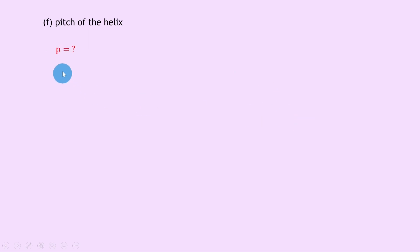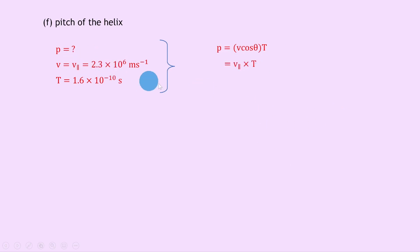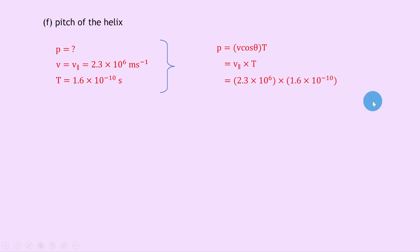Part f: calculate the pitch of the helix. The pitch p is caused by the parallel component of velocity from part a: 2.3e6 meters per second. The period from part e is 1.6e-10 seconds. Using p equals v cos theta times t, which equals v parallel times t: 2.3e6 times 1.6e-10 = 3.7 times 10 to the minus 4 meters.